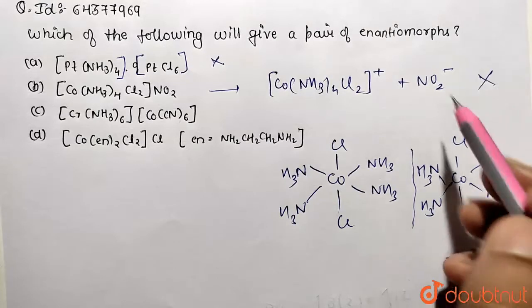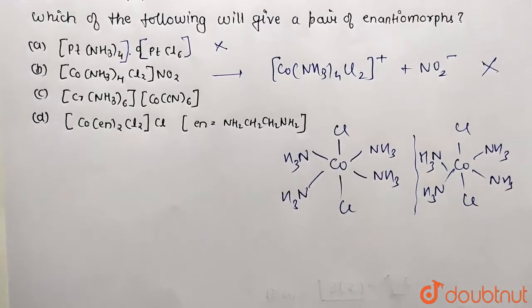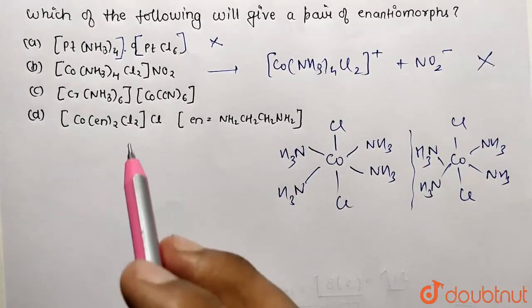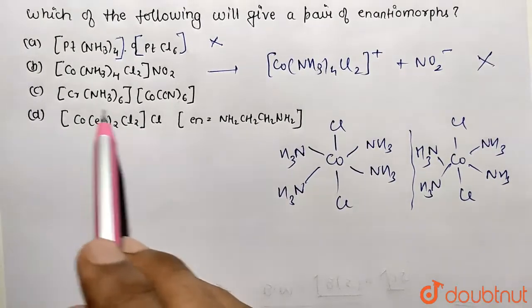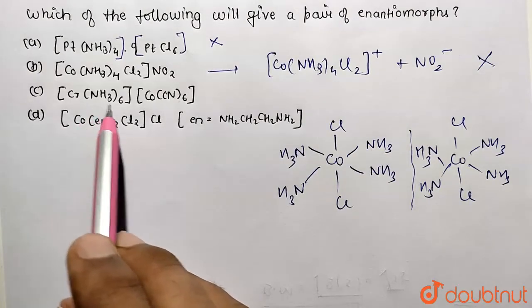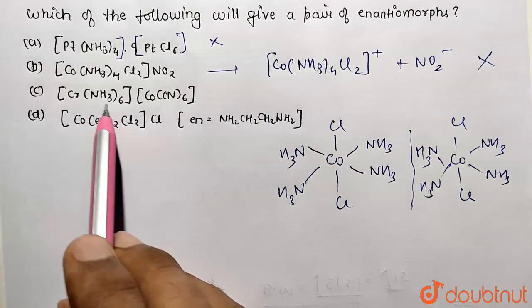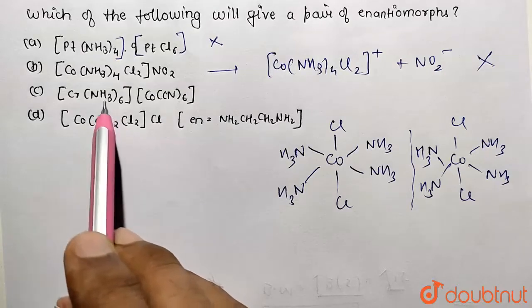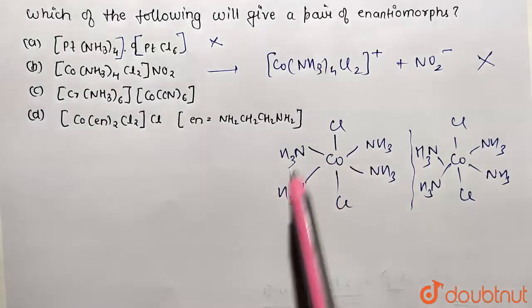So it's also not going to show an enantiomeric pair. Let's go with option C. This is the coordination entity given. Similar problem arises here also. What's the reason there? The reason is that here the presence of same type of ligands is there which is monodentate ligand, and they are contributing six ligands. So similar geometry will be drawn and they are going to be superimposable in nature. So it's also not going to show.